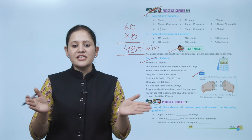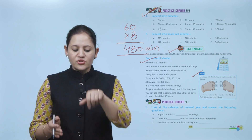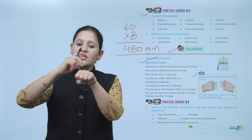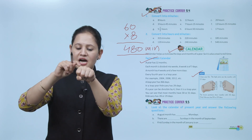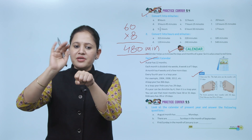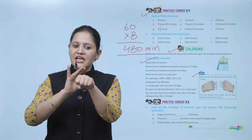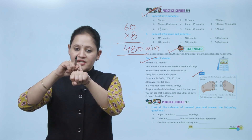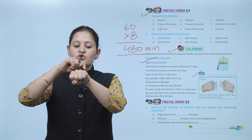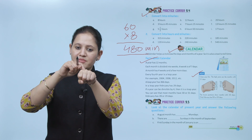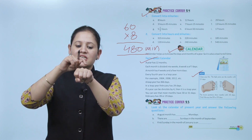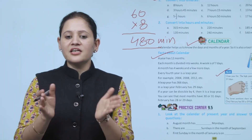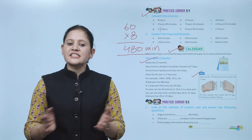Most months have 30 or 31 days; February has 28 or 29 days. Here is a method to find out how many days are in a particular month using your knuckles. The knuckle bumps mean 31 days and the dips mean 30 days. Starting from January on the first knuckle: January 31, February is the exception (28 or 29), March 31, April 30, May 31, June 30, July 31, August 31, September 30, October 31, November 30, December 31.